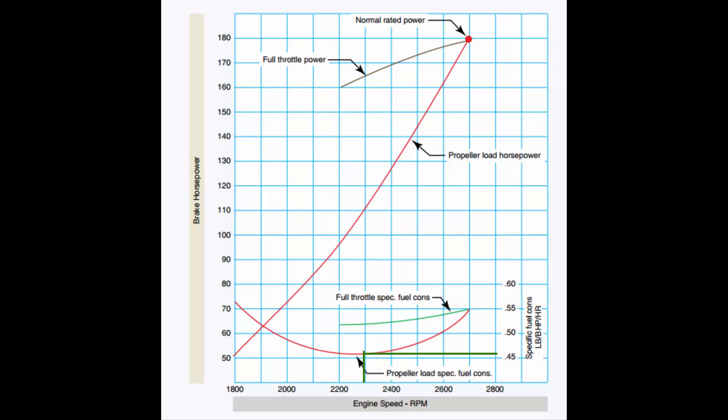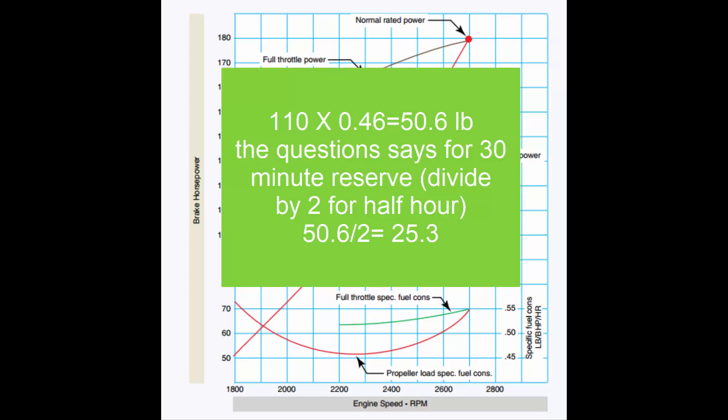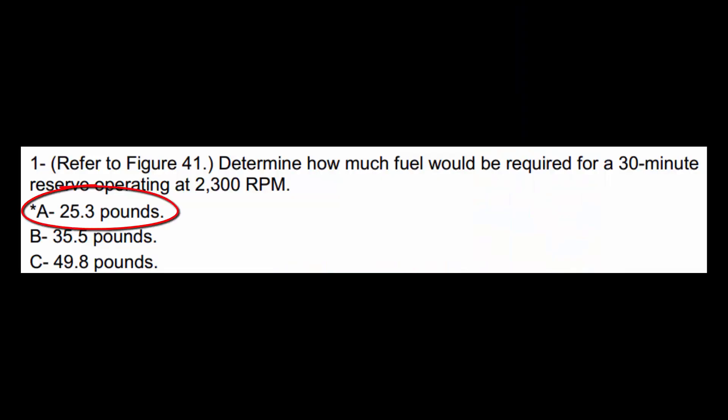So there's going to be a little bit of math involved here. So the engine burns 50.6 pounds per hour at 110 horsepower. What we do is multiply 110 by 0.46. So it's a two-step process, and then we have this multiplication at the end.